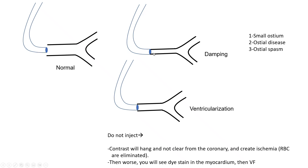We see this even without disease — for example, if you engage a normal conus, which is a small branch: if your catheter goes into the conus branch and you inject, you'll have damping and ventricularization and can progress through myocardial stain of the RVOT that the conus supplies, then V-fib. Whatever the cause — true right coronary or conus — whenever you see this, it's a small ostium, ostial disease, or ostial spasm.